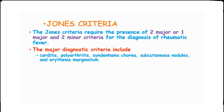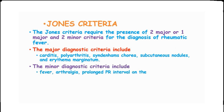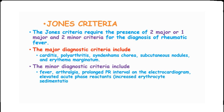In the Jones criteria, the major diagnostic criteria include carditis, polyarthritis, Sydenham's chorea, subcutaneous nodules and erythema marginatum, while the minor diagnostic criteria include fever, arthralgia, prolonged PR interval, and acute phase reactants such as increased ESR, presence of C-reactive protein and leukocytosis.